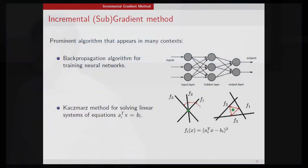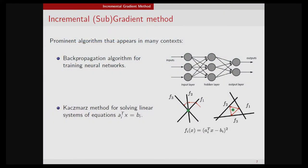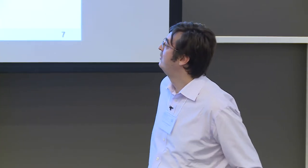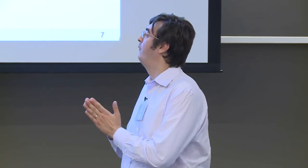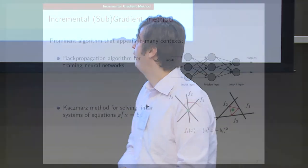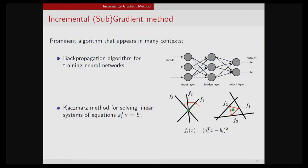Incremental gradient has been used in several application areas. Stochastic gradient descent has been used successfully in training deep networks. There are also fundamental connections to solving linear systems — the class of Kaczmarz methods, which are row projection methods, are essentially special cases of incremental gradient methods. Today I will also argue that coordinate descent methods are a special case of incremental gradient methods.